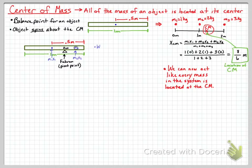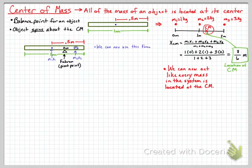The meter stick itself has all of its mass at its own center of mass, which is some distance away from the fulcrum point. Knowing the mass placed onto the meter stick and the distances involved, since it is a meter stick we can easily locate the distances. We can then use the formula to find the total mass of the system.